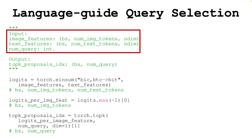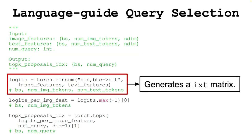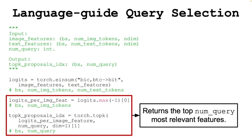How it works is depicted in this algorithm. The inputs are the text and image features together with the number of queries we want to select. We take the inner product of the image and textual features across the last dimension, resulting in a matrix that has I rows and T columns, and then select the top-K highest values in this matrix across the image features dimension.